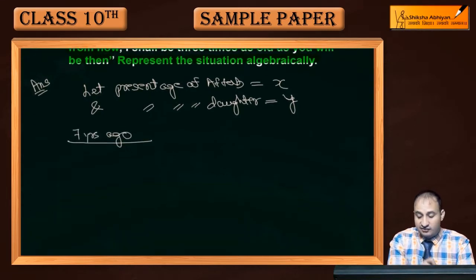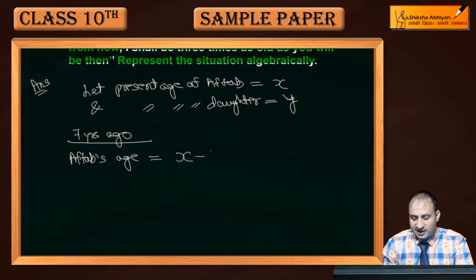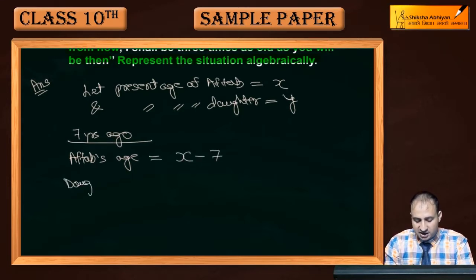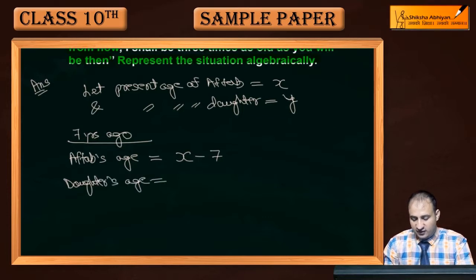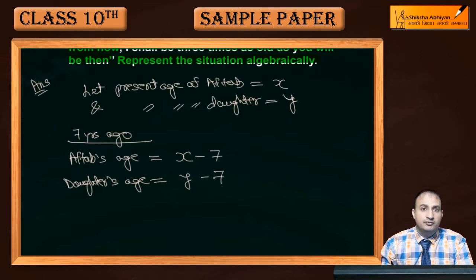7 years ago, Aftaab की age कितनी होगी? अगर आज x year का है तो 7 years ago x minus 7 का होगा। और daughter की age हो जाएगी y minus 7। दोनों में से 7 minus कर दीजिए। According to question, Aftaab जो है 7 times of his daughter था।